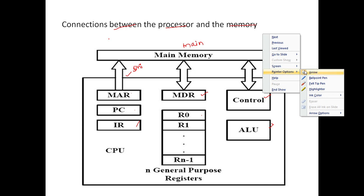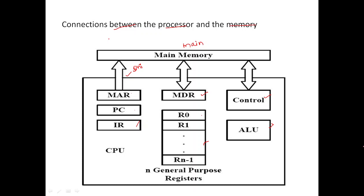Let's discuss the different registers. First, the Memory Address Register (MAR) holds the address of the location to be accessed. So if I want to access some location X, that address is held by the MAR. Next is the Memory Data Register (MDR), which contains the data to be written into or read out of the addressed location.